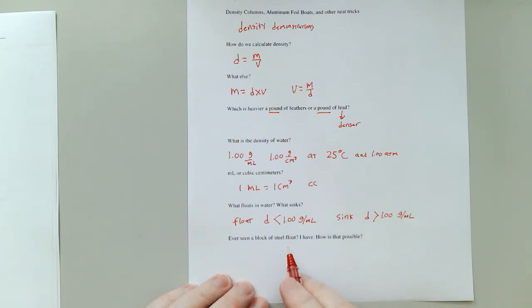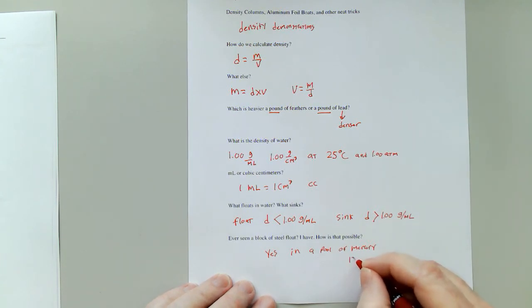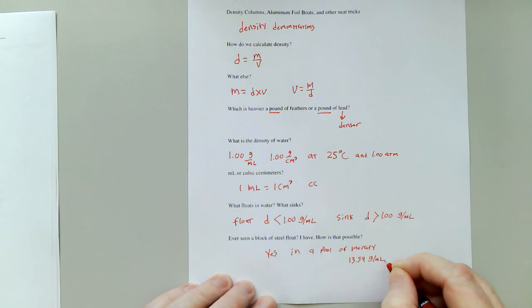Now, can you make a block of steel float? The answer is yes. How about in a pool of mercury? And that's because the density of the steel is less than the density of the mercury. Mercury is a very dense substance, 13.59 grams per milliliter.